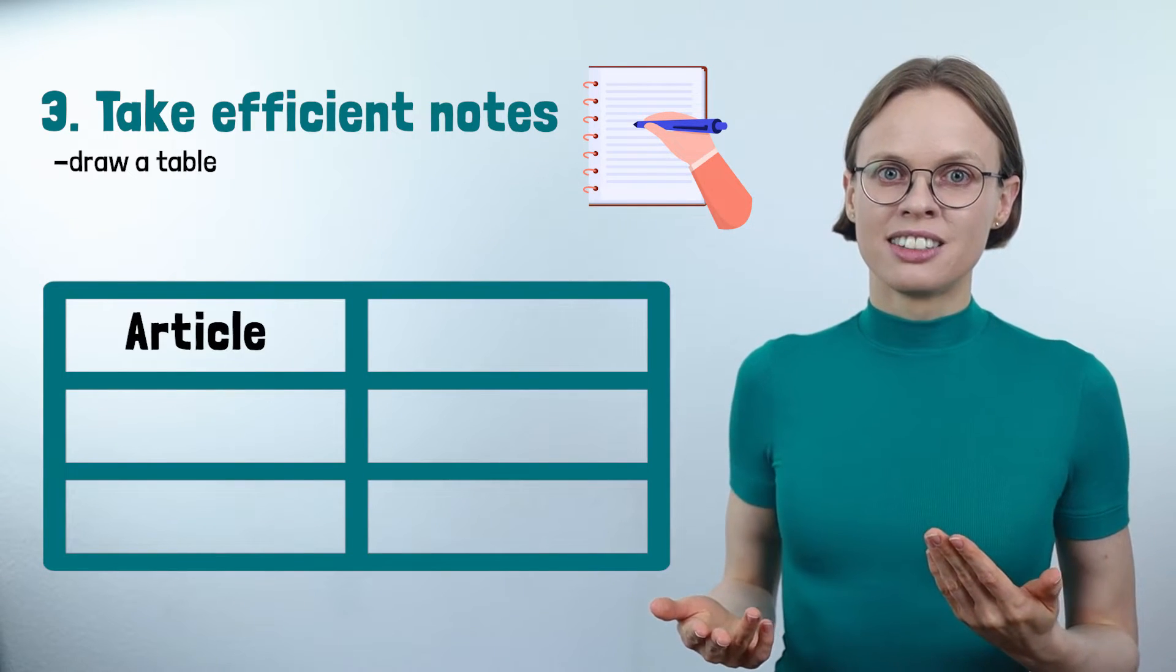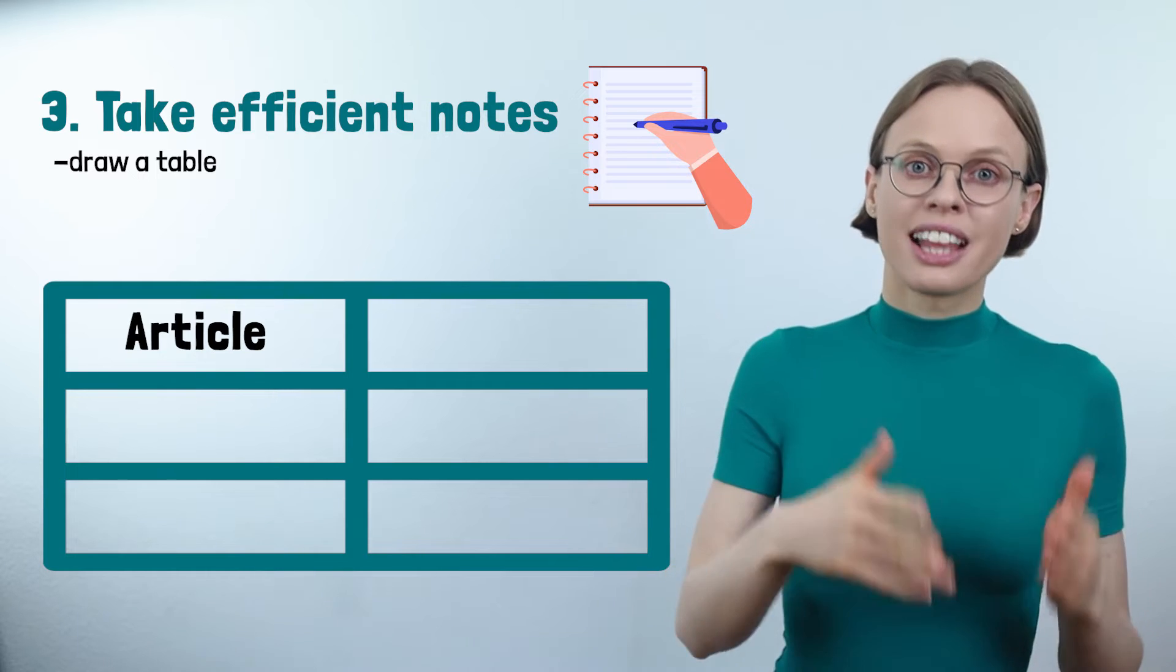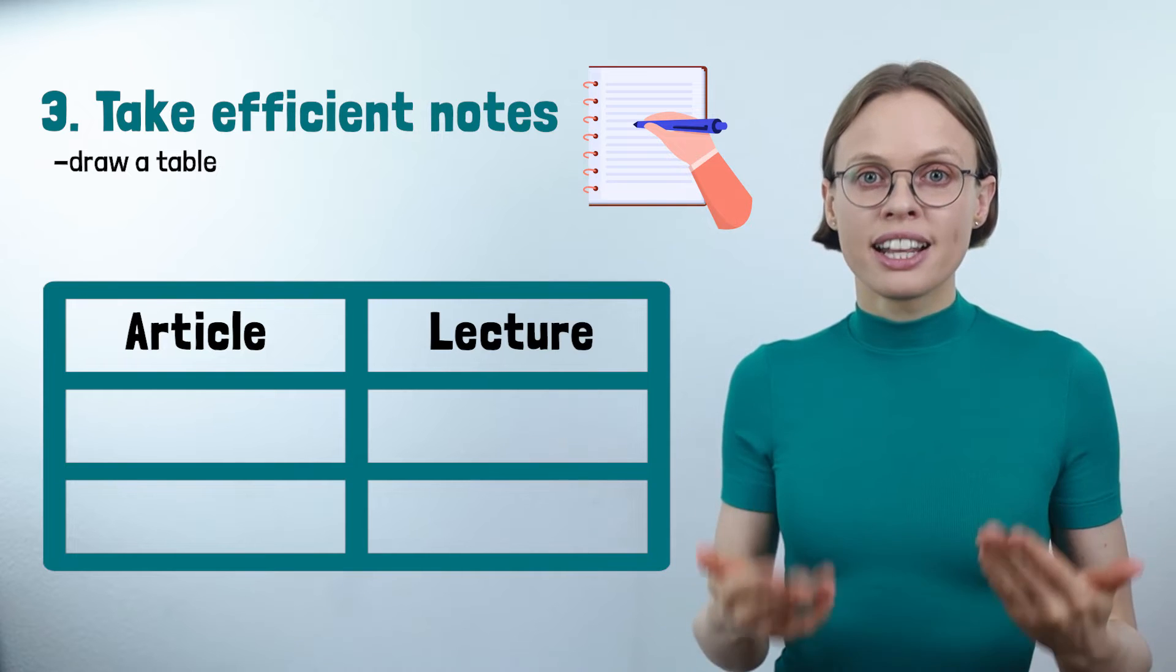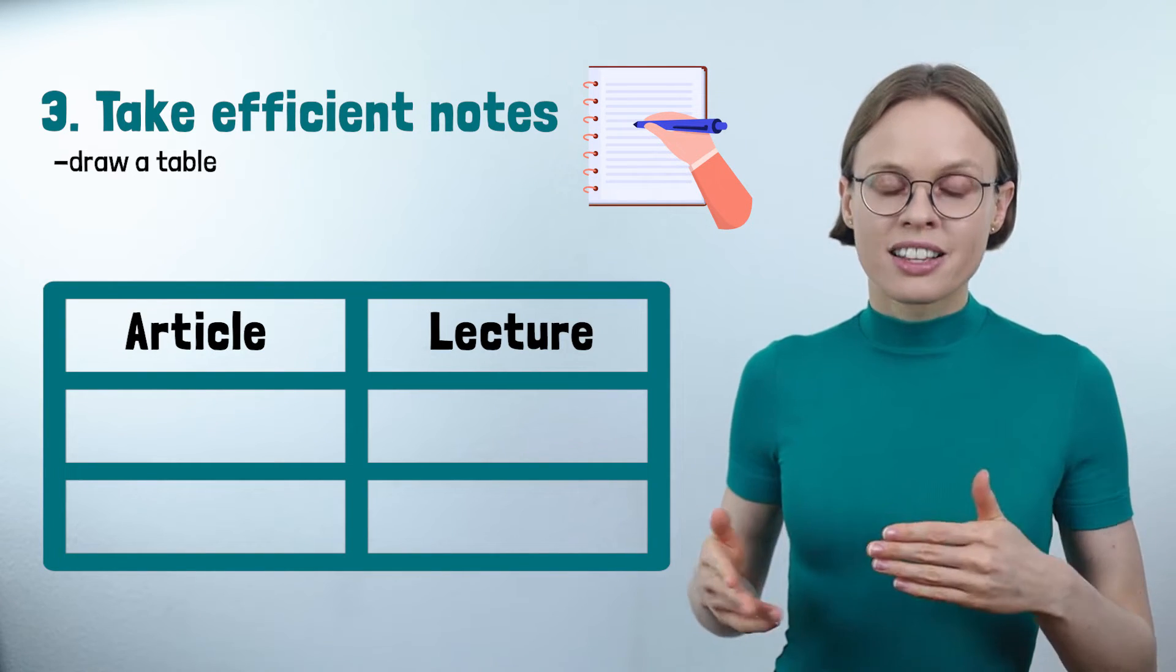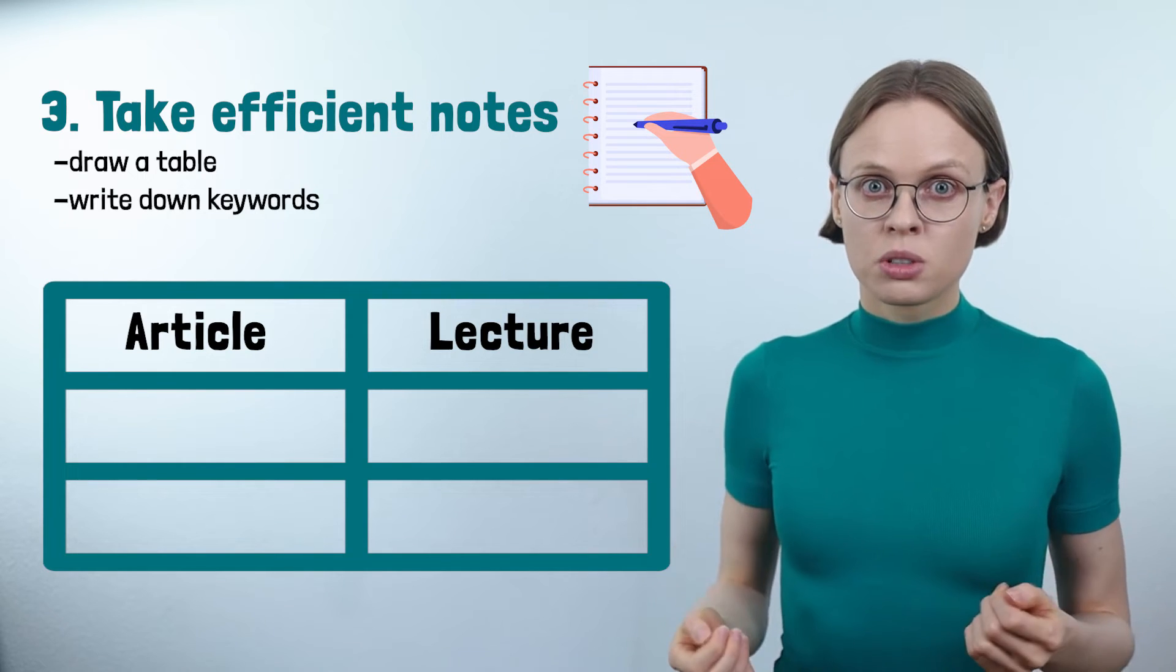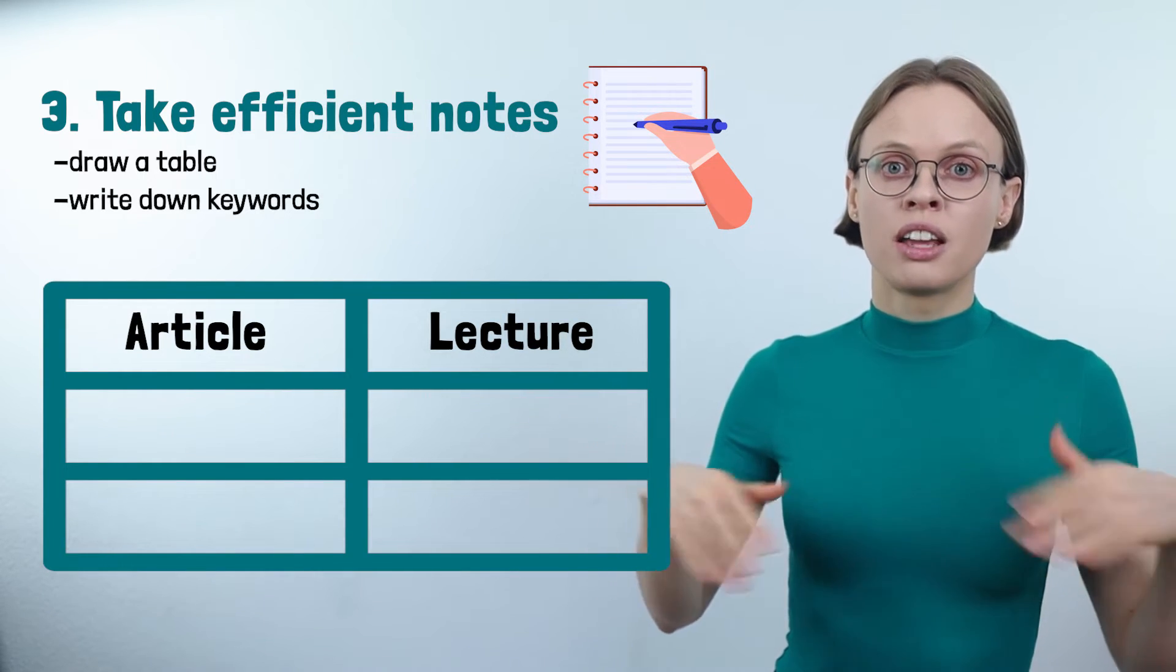When reading the article, take notes on the left side of the table. When listening to the lecture, write down your notes on the right side of the table. Only write down keywords. There is no time for more.